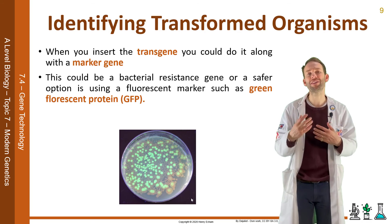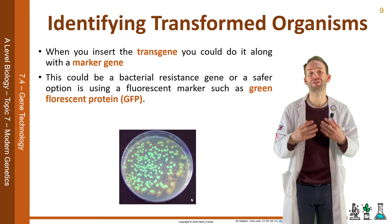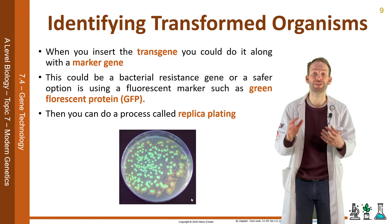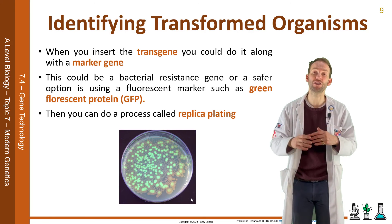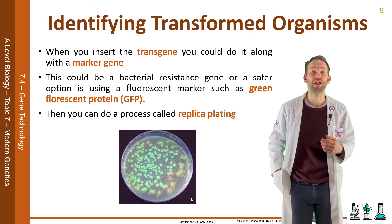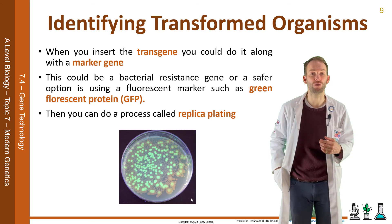A safer way is to use green fluorescent protein as the marker. Then all we have to do is shine UV light on it and we'll see which ones have been transformed.